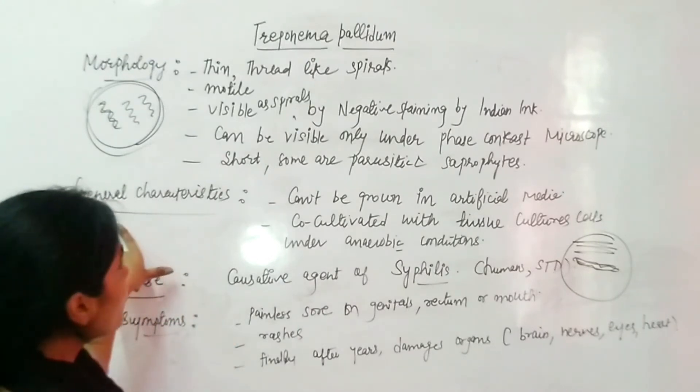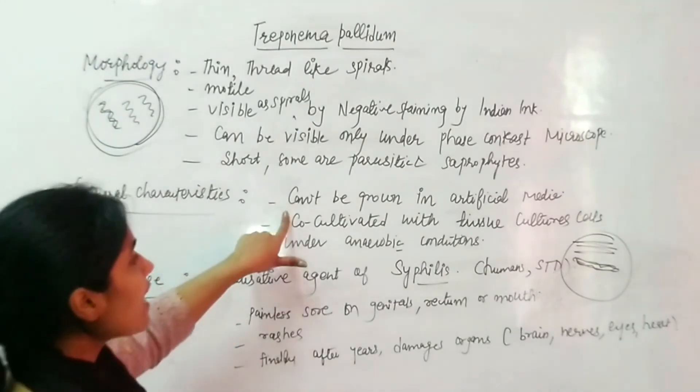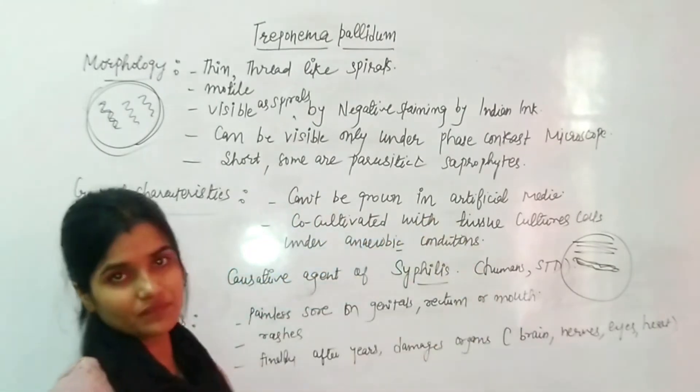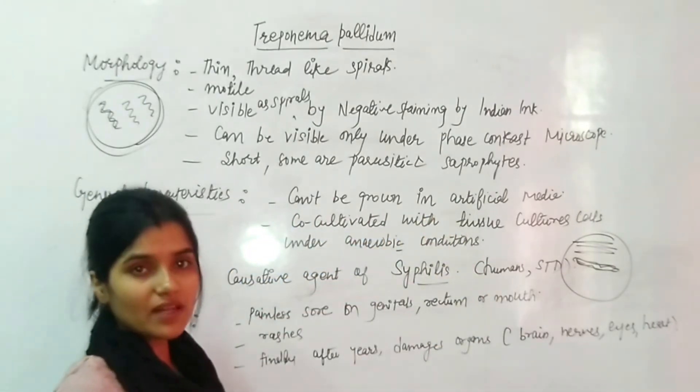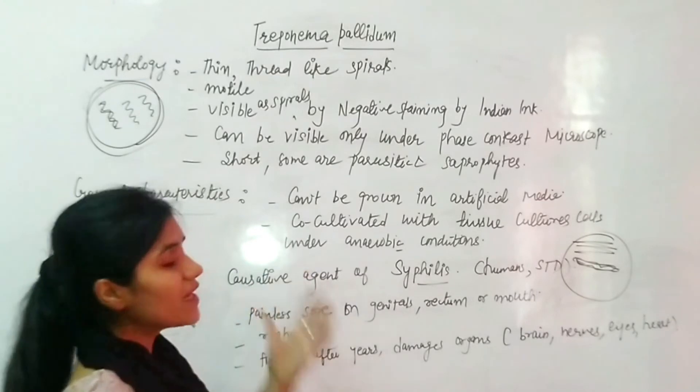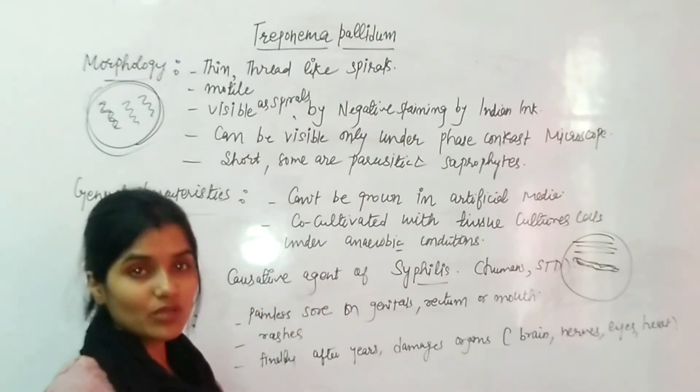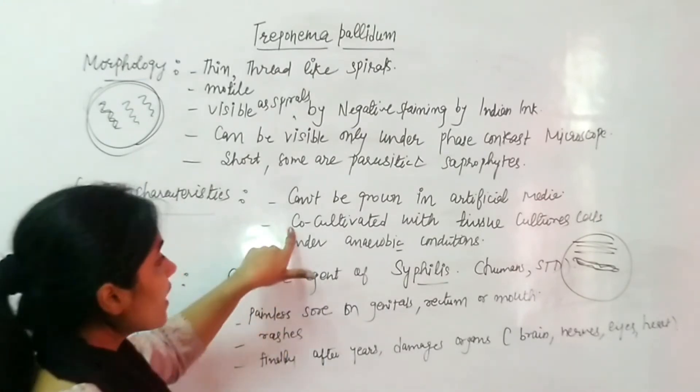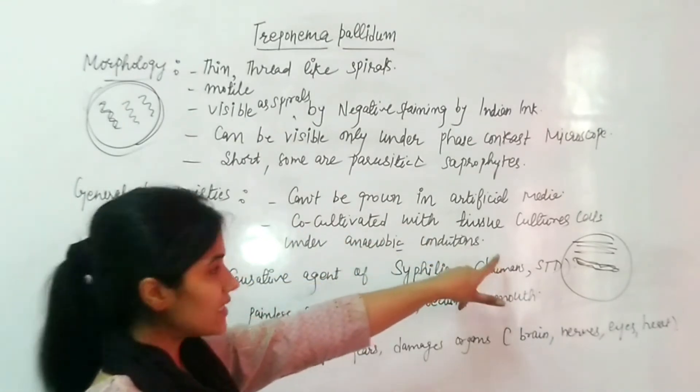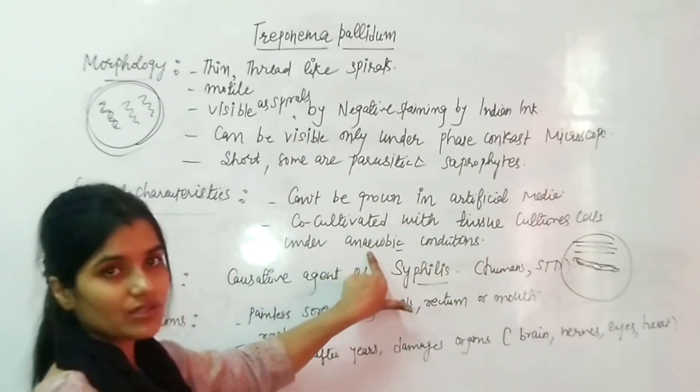General characteristics of Trypanema pallidum are: they can't be grown in artificial media like blood agar. We can't cultivate them in laboratory conditions. So they are co-cultivated with tissue culture cells under anaerobic conditions.